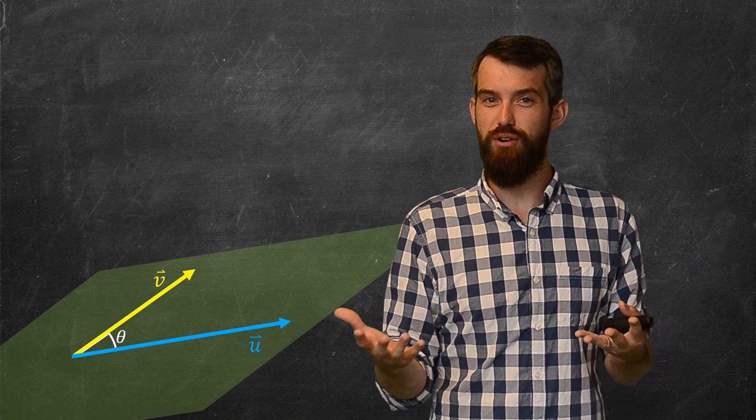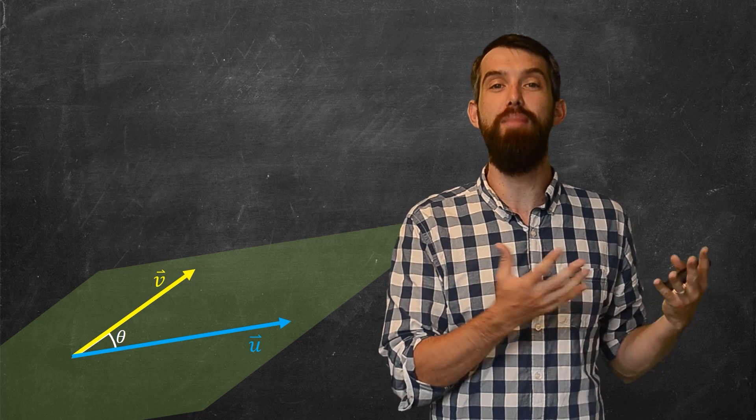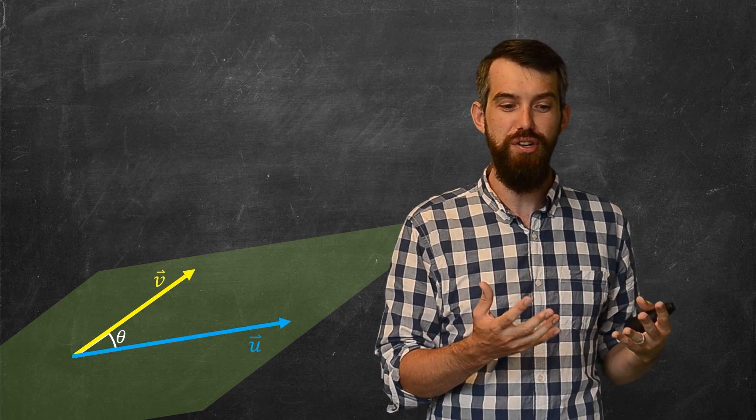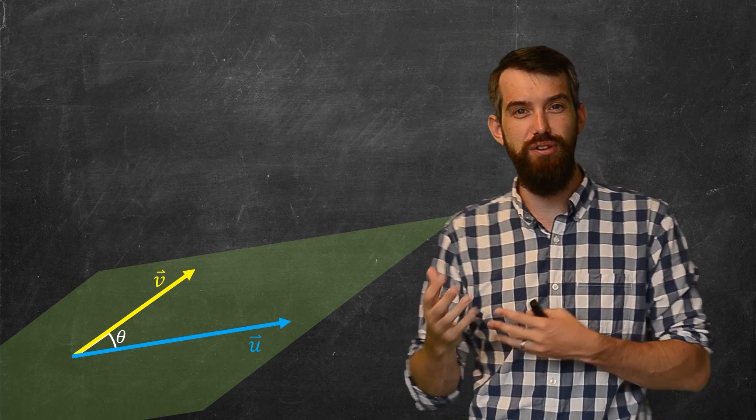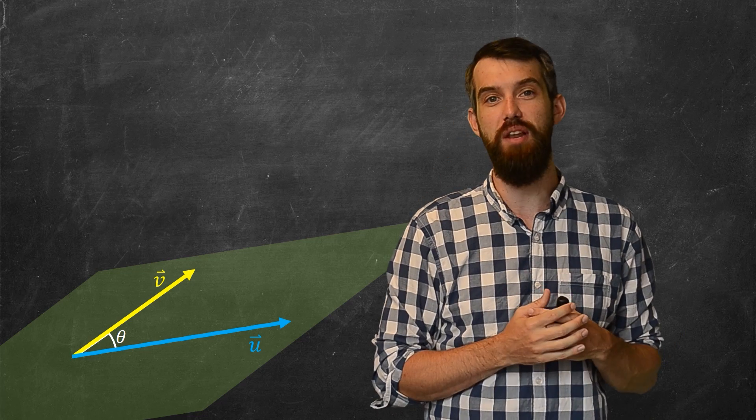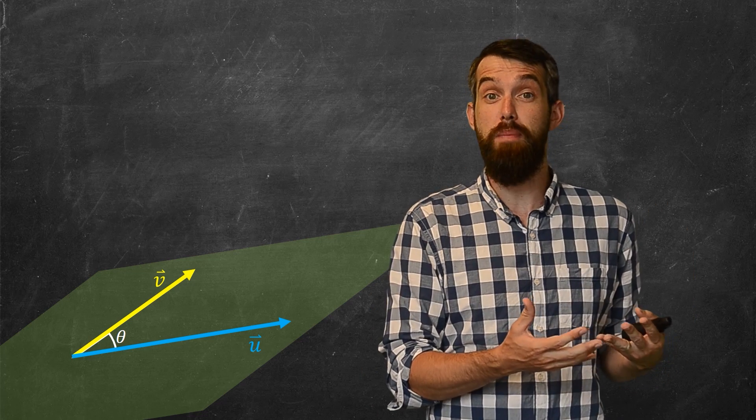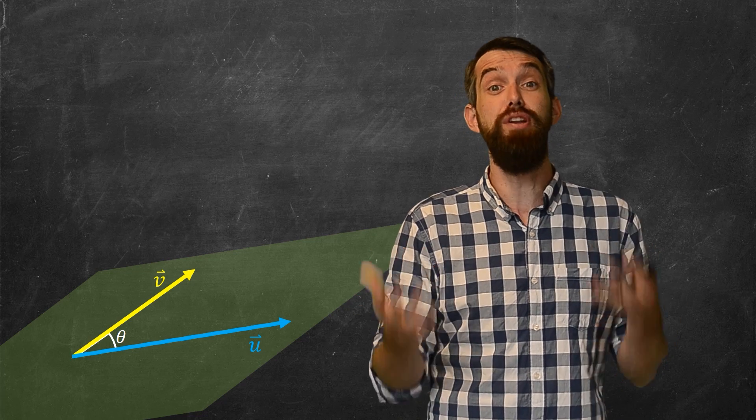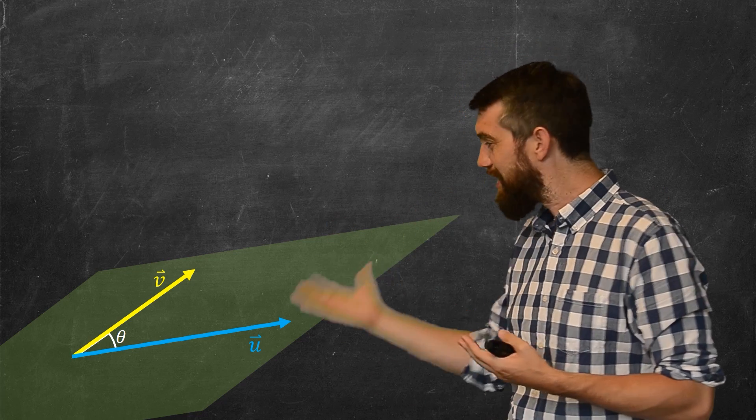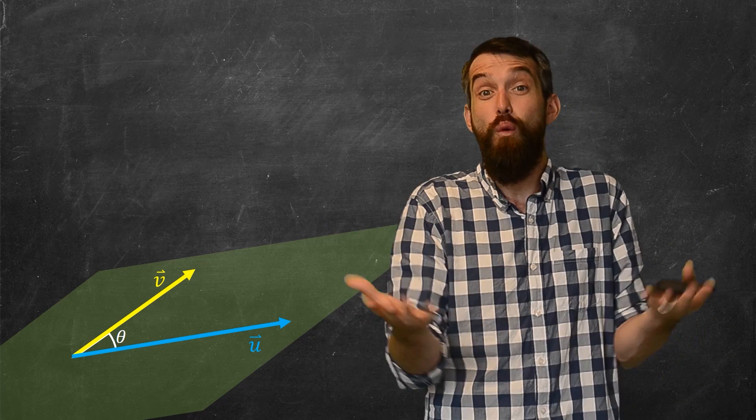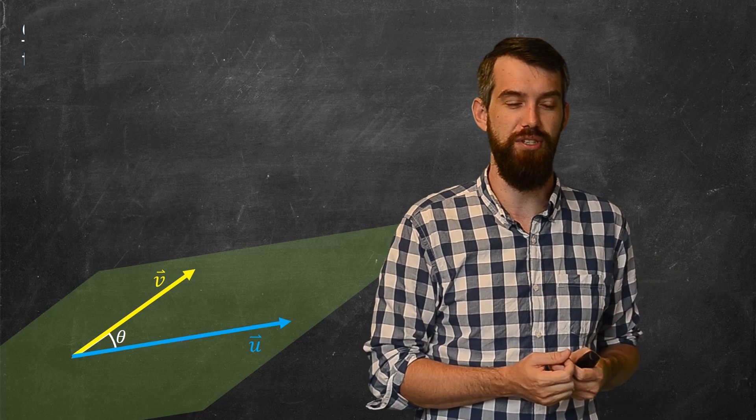Similarly, we're going to motivate the cross product by looking at a geometric problem. Consider two vectors u and v that have an angle theta between them. Assuming that those vectors are non-zero and that they're not parallel to each other, these two vectors are going to define a plane. What I've sketched here is a plane that is formed by these two particular vectors.